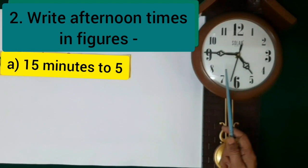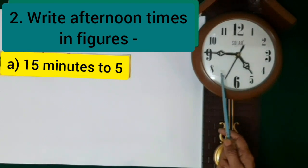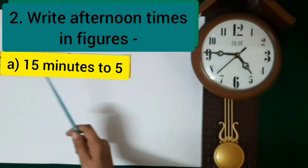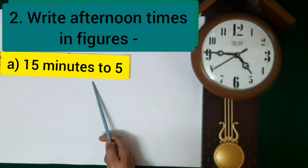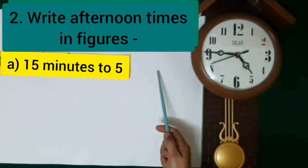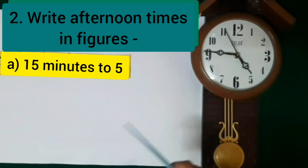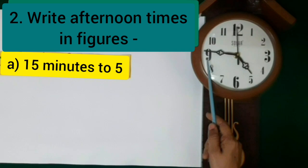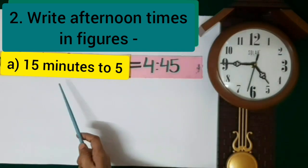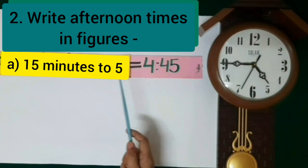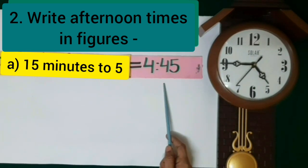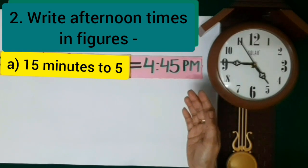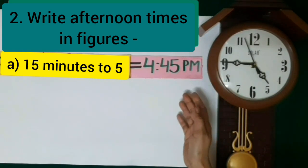The time is quarter to 5 on the clock. Now we will write 15 minutes to 5 in figures. When the minute hand is at 9, it shows 45 minutes. So 15 minutes to 5 means 4.45. This time is afternoon time, so we write 4.45 p.m.